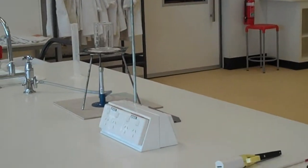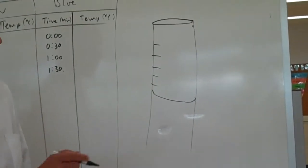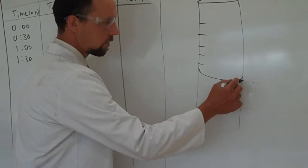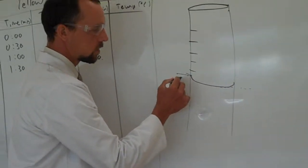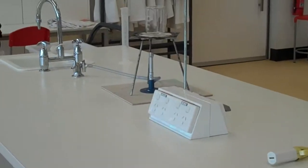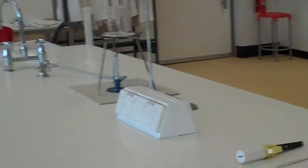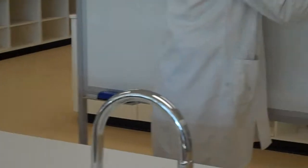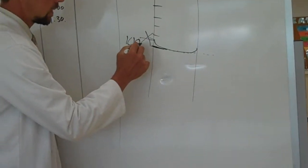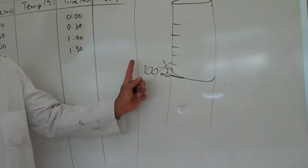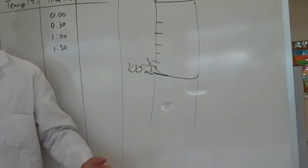Back to the meniscus. Where I want you to read the level of the water when we have a meniscus present is at the bottom of the meniscus. Not at the sides. Where it's sort of licking up at the sides. Don't read it there. Read it at the bottom. So you'd want to see the measurement for 100 millilitres there at the bottom. Okay? Pretty straightforward.